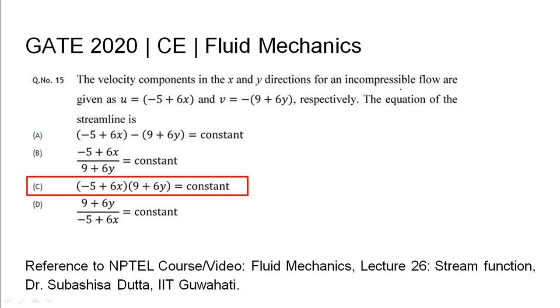So the velocity components were given for an incompressible flow as minus 5 plus 6x and minus 9 plus 6y. The equation of the streamline was obtained as minus 5 plus 6x into 9 plus 6y equals constant. The relevant NPTEL reference has been cited.